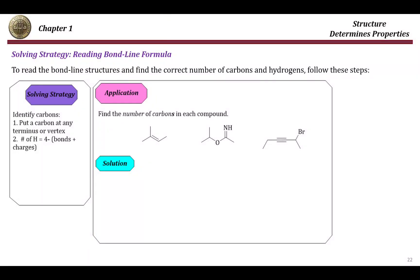In this video I will show you a solving strategy that can be used to go from bond-line structures to structural formulas, or it can be used for reading bond-line structures. Since bond-line structures will be used throughout the whole course, you should know at each point in this structure how many carbons and how many hydrogens we have at each carbon. Simply, to read a bond-line structure, just put a carbon at any terminus or vertex.